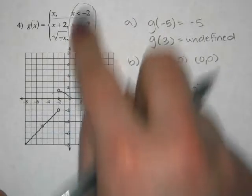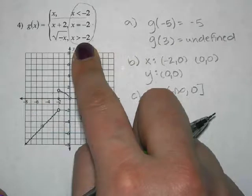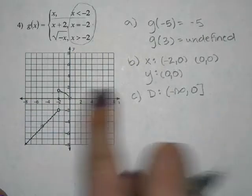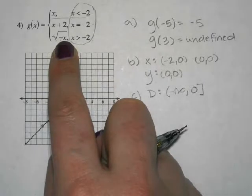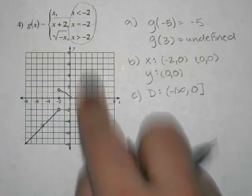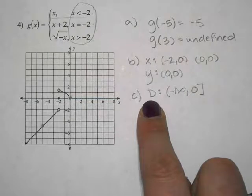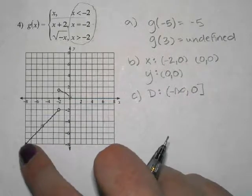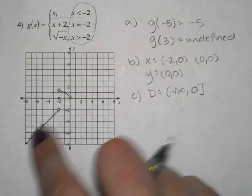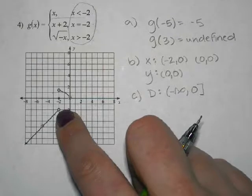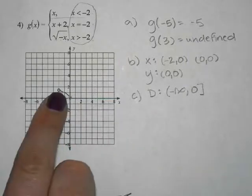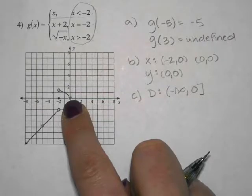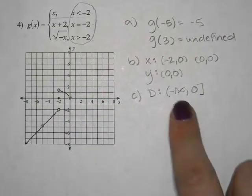Looking at the pieces made me think that all x values were going to be used, but when I looked at the picture, I realized all the positive x values are a problem. In the last piece, if we square root a negative version of a positive number, that's the same as square rooting a negative. The domain describes x values that are allowed. From the picture, negative infinity is the far left, all the negatives work, negative 2 works, small negatives work, and 0 works, but nothing past 0. That's why I said negative infinity to 0.